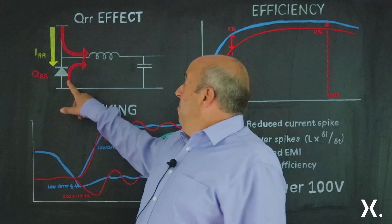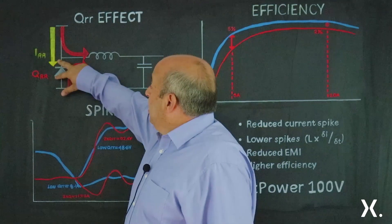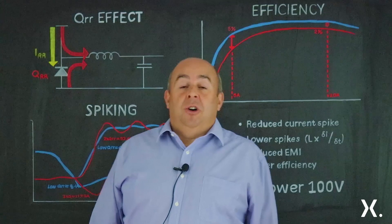During the dead time when the load current flows through the body diode, this gives rise to the stored charge QRR.